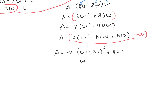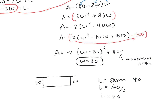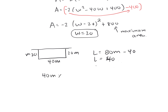The width is going to be 20 and 800 is our maximum area. Going back to the dimensions: the width is 20, we had 80 meters total, subtract the 40 from both widths, which leaves 40 for the length. Since we only have one length side, we don't divide by 2, so the length is 40 meters. The dimensions of the rectangular area are 40 by 20.